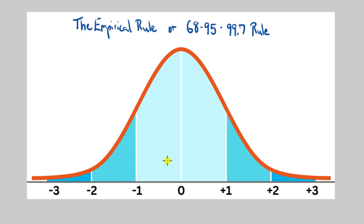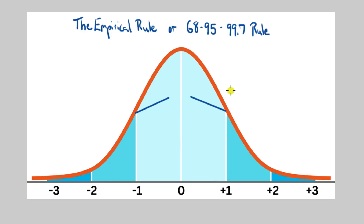We can calculate probabilities using this version of the curve and easily convert them to other measurements. This is known as the empirical rule, or the 68-95-99.7 rule. If we look at the distance from one standard deviation below the mean up to one standard deviation above the mean, the empirical rule says 68.27% — about 68% — of scores fall in this range. So if you randomly select a score from a normally distributed population, there's a 68% chance it will be within one standard deviation of the mean.